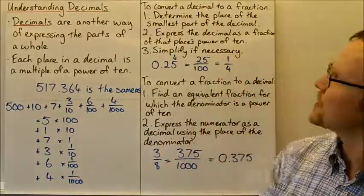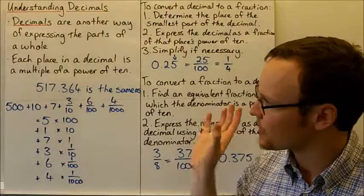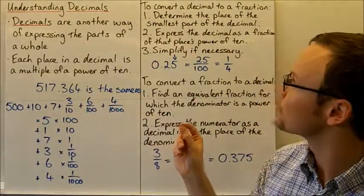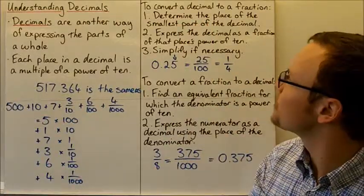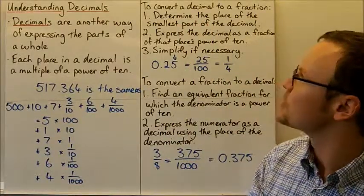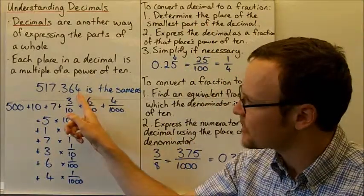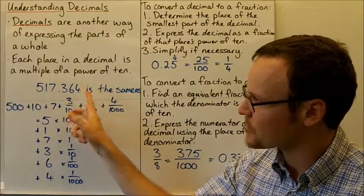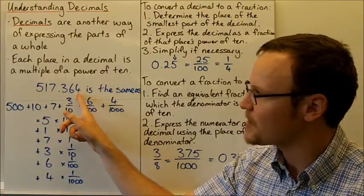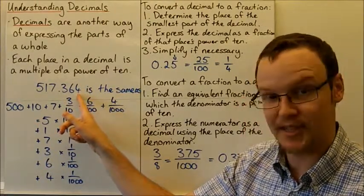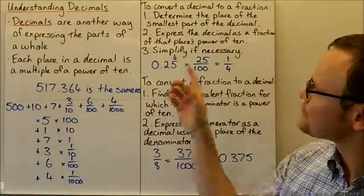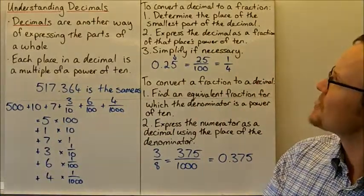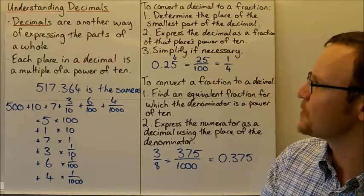To convert a decimal to a fraction, we first need to determine the place of the smallest part of the decimal. So here, this is the smallest part of the decimal, and the place is the thousandths column.